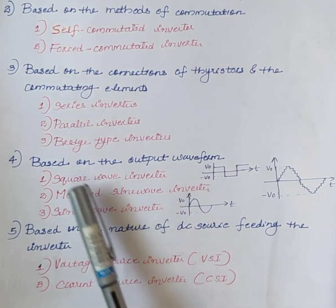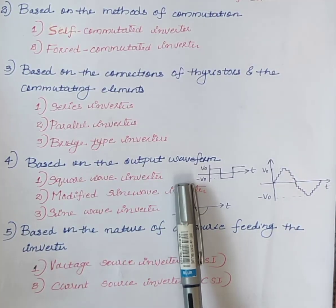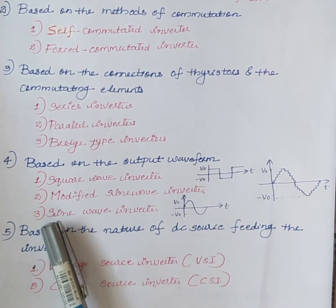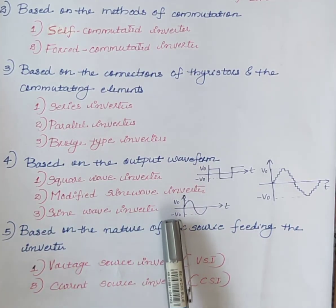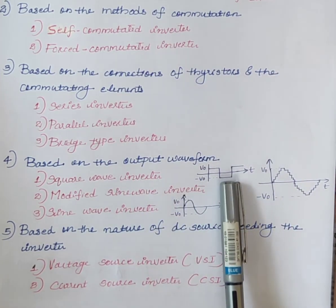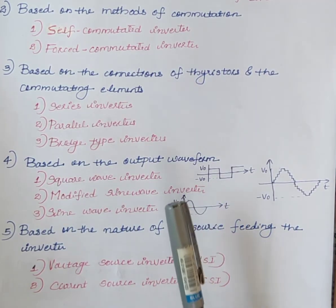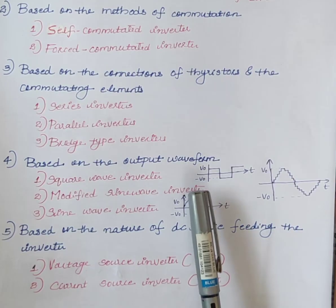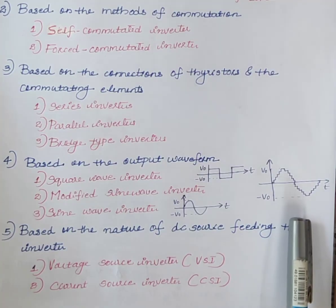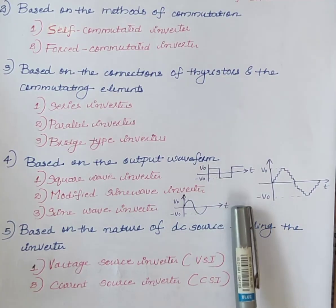The next classification is based on the output waveform. The first one is square wave inverter, the second is modified sine wave inverter, and the third is sine wave inverter. In a square wave inverter, the output waveform is a square wave. Modified sine wave inverter is also known as quasi wave inverter — this inverter generates a signal near to the sine wave. Sine wave inverter generates a pure sine wave.